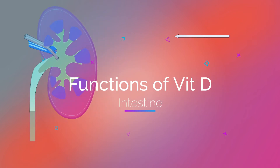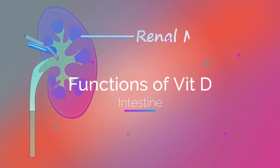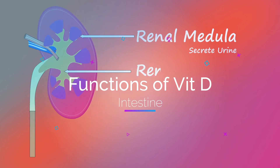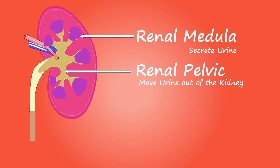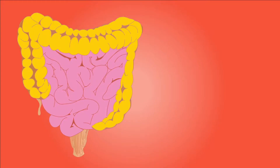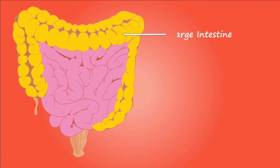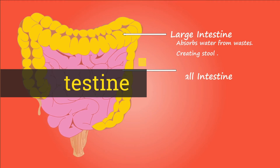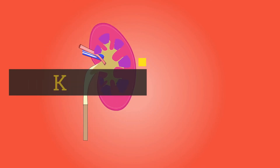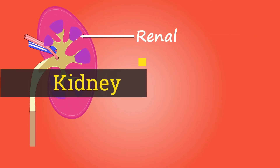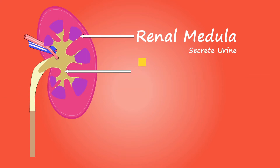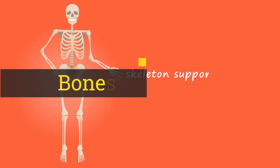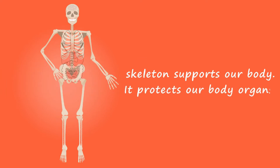Calciferol is the main active metabolite of Vitamin D. There are three principal sites of action: intestine, kidney, and bone. It maintains calcium homeostasis in the body. In the intestine, it increases calcium and phosphorus absorption via calcitriol. In the kidney, it decreases calcium and phosphate excretion via 25-OH-D3. In bone, it increases calcium and phosphate deposition via 1,25-OH-D3.